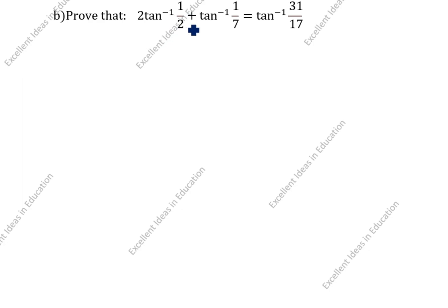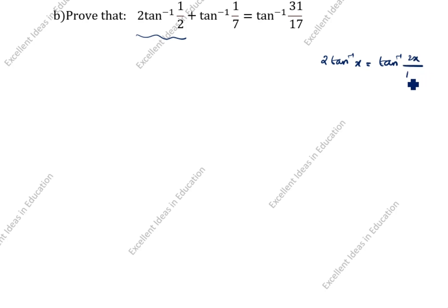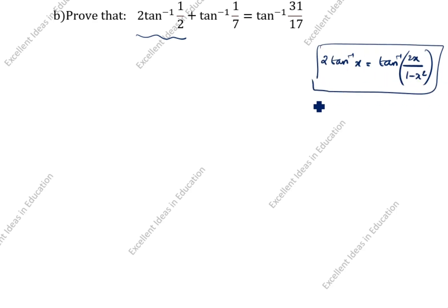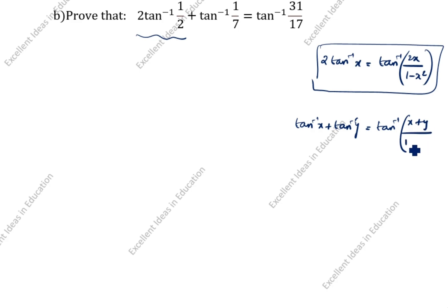Now the second part: tan inverse of 31 by 70. We will split this using the double angle formula for tan inverse. So how we will split this one — tan inverse of x equal to tan inverse, using x plus y plus y. Equal to tan inverse of x plus y. This is the second formula.